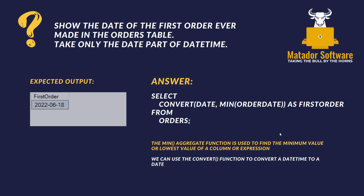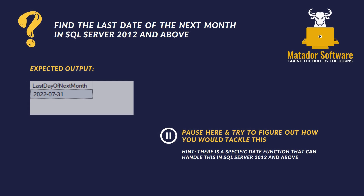Here's the answer to our first beginner-friendly question: the date of the first order ever made in the orders table, where we just take the date part. The answer: SELECT CONVERT(date, MIN(order_date)) AS first_order FROM orders. The MIN aggregate function is used to find the minimum value of a column or expression. Unlike some other aggregations like COUNT where you can count everything with star, we need the specific column. Then we convert the data type to date. A fairly simple first question.